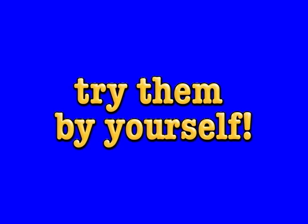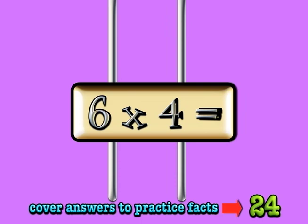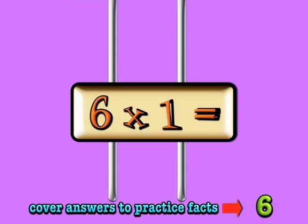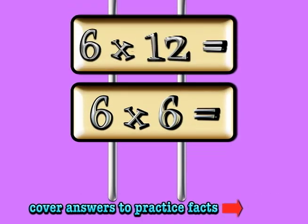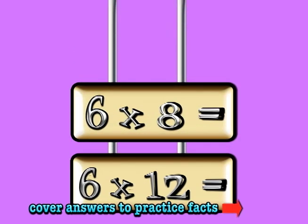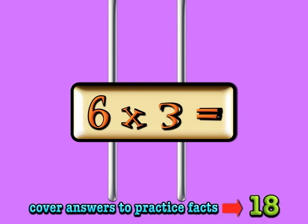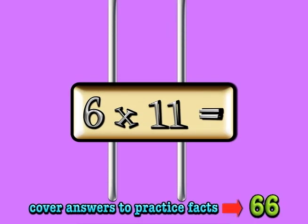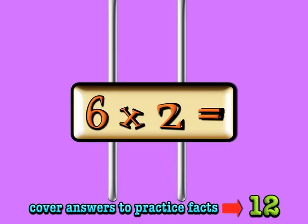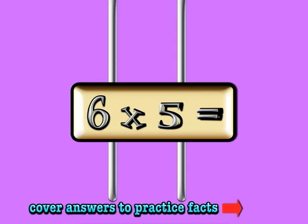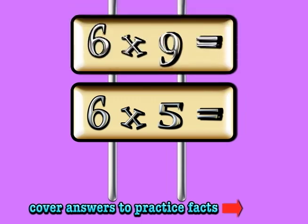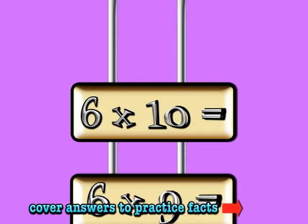Why don't you try them by yourself? When I multiply by 6, it goes a little bit like this. 6 times 4, 6 times 1, 6 times 7, 6 times 6, 6 times 12, 6 times 8, 6 times 3, 6 times 11, 6 times 2, 6 times 5, 6 times 9, 6 times 10.